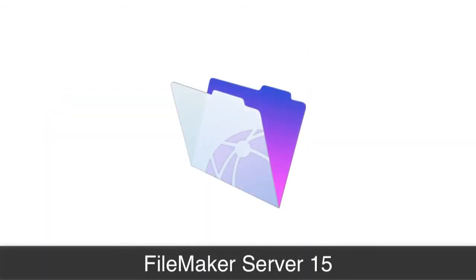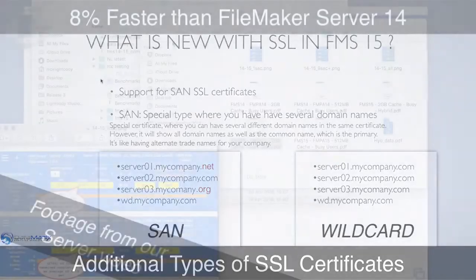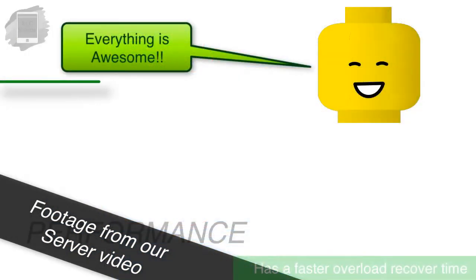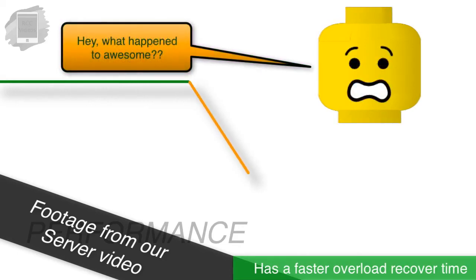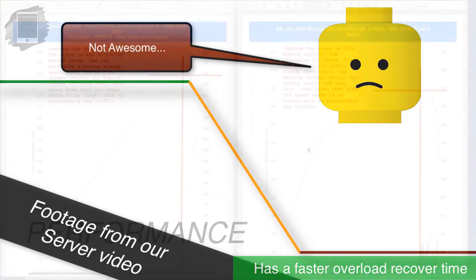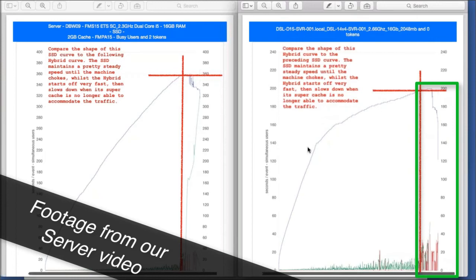With FileMaker Server 15, there are several improvements. It supports additional types of SSL certificates. It also has about an eight percent performance improvement as tested by senior developers in the FileMaker community. Additionally, FileMaker Server 15 will recover from an overload condition — for example, if 200 people push hard on the server simultaneously, FileMaker Server 15 recovers from that overload much more easily. It's actually much more robust under the hood.